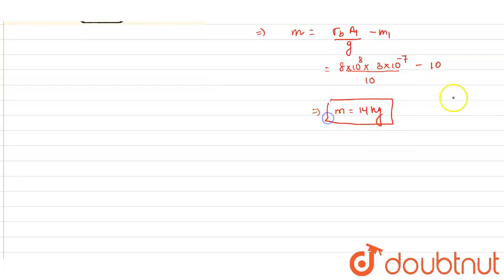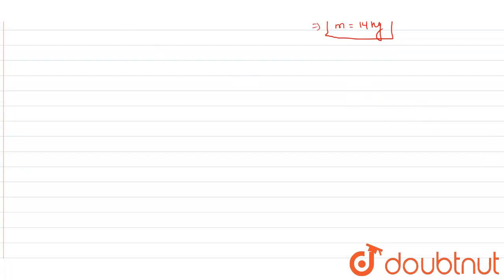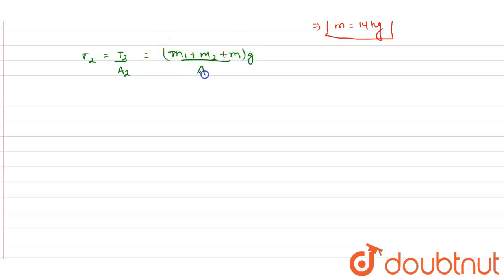For the second wire, the tension will be due to masses m1, m2, and m combined. So T2 = (m1 + m2 + m) × g. The stress in the second wire is σ2 = T2 / A2 = (m1 + m2 + m) × g / A2.